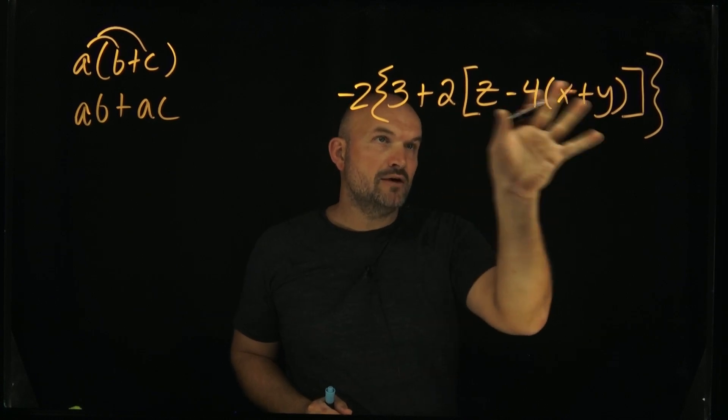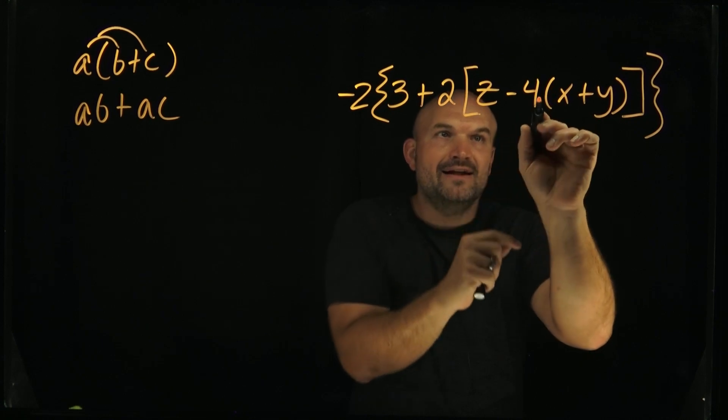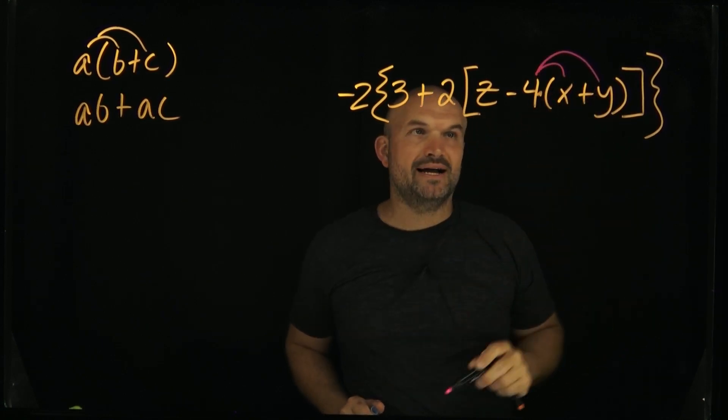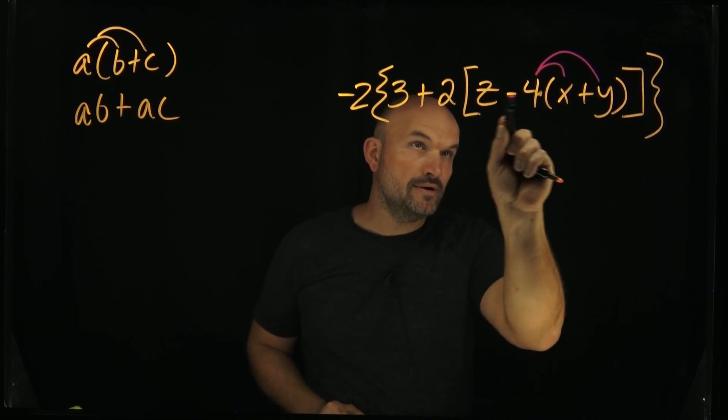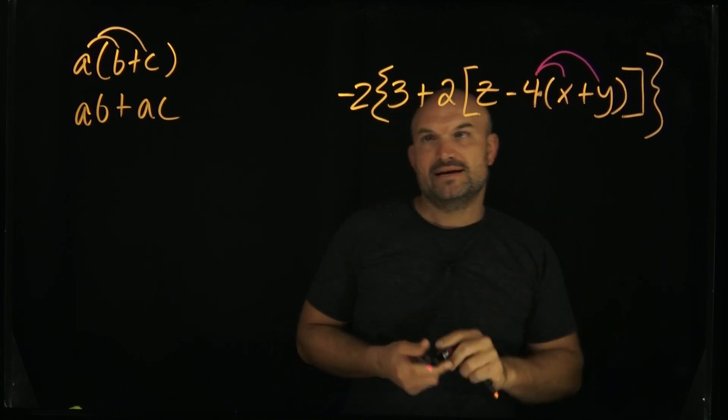So in this first case, we're going to work on the innermost parentheses. I can't simplify x plus y, so I go out and say this is negative 4, multiply that. So now I need to multiply this negative 4. Remember, it's a negative 4. So it's minus 4 times x plus y. So it's negative 4 times x and negative 4 times y.